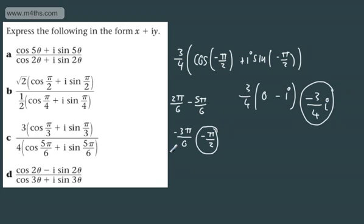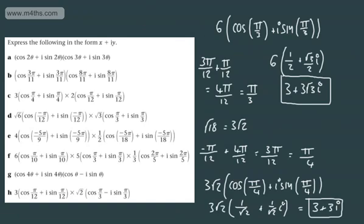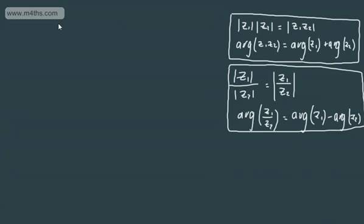We've gone through those fairly quickly to cover a fair few examples. Take-home message: when you're multiplying, multiply the moduli and add the arguments. When you're dividing, divide the moduli and subtract the arguments. Those properties we looked at before, whilst not hugely necessary to understand right now, will certainly be helpful when we go on.